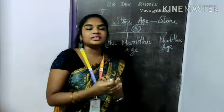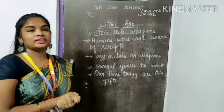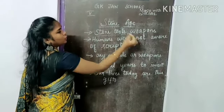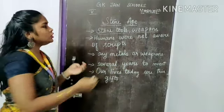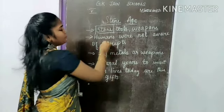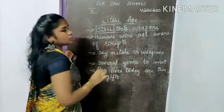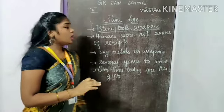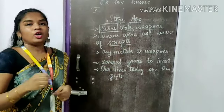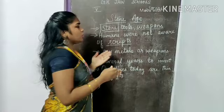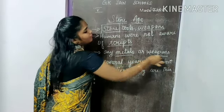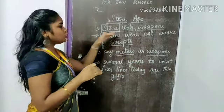We will see all about these ages in this class. During the stone age, stone tools and weapons were used. Tools and weapons were only made by stones. Humans were not aware of scripts. Our ancestors were not aware of scripts. Scripts are the written documents, so they don't know how to write. They were not aware of any metals and weapons. They only knew how to make stone tools and weapons.